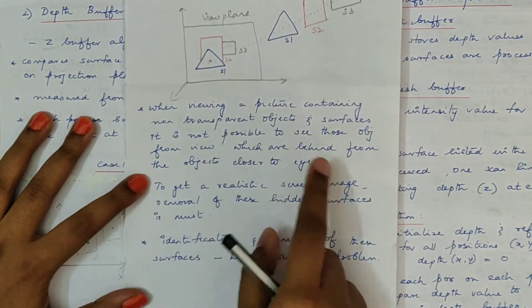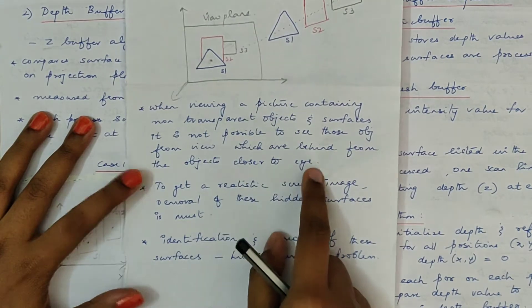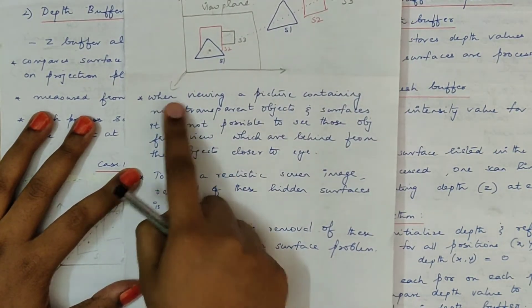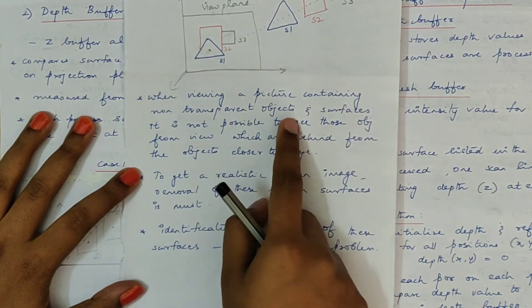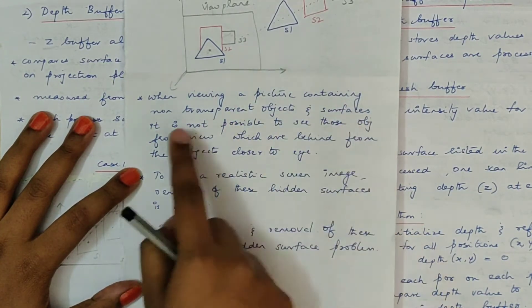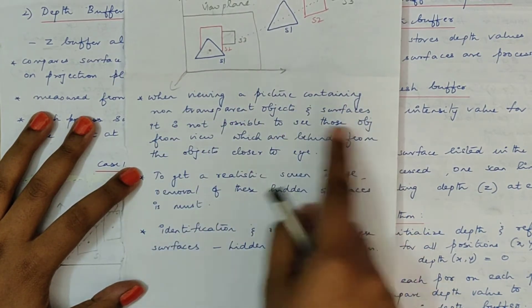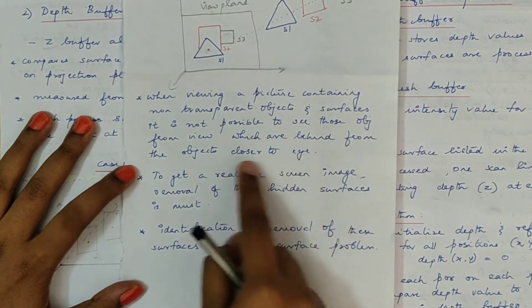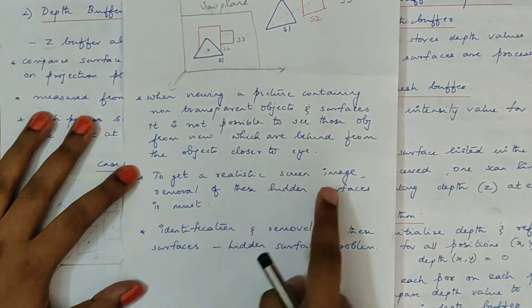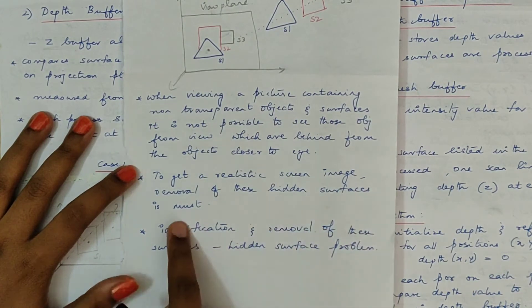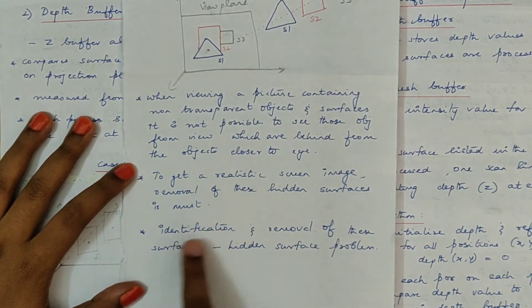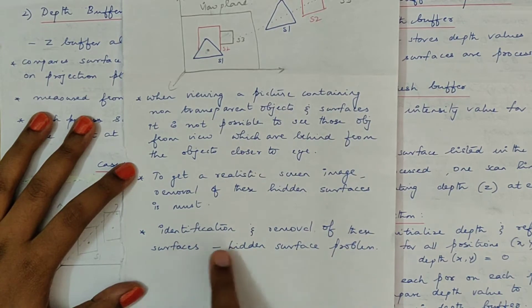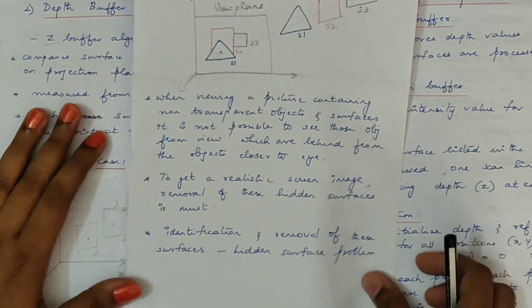We have already seen the definition for visible surface detection: when viewing a picture containing non-transparent objects and surfaces, it is not possible to see those objects from view which are behind the objects closer to the eye. To get a realistic screen image, removal of these hidden surfaces is a must. The identification and removal of hidden surfaces is called the hidden surface problem.